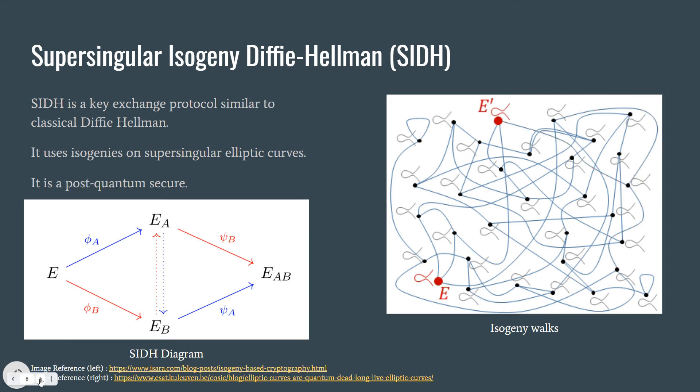And the j-invariant of this elliptic curve is going to be used as a shared key for both parties. On the picture on the right, we can see if you start with an elliptic curve, there are many possible walks between the elliptic curves. And these walks are performed with isogenies from one curve to another. And it's very complex. These isogeny walks are very complex and it's like a random walk.